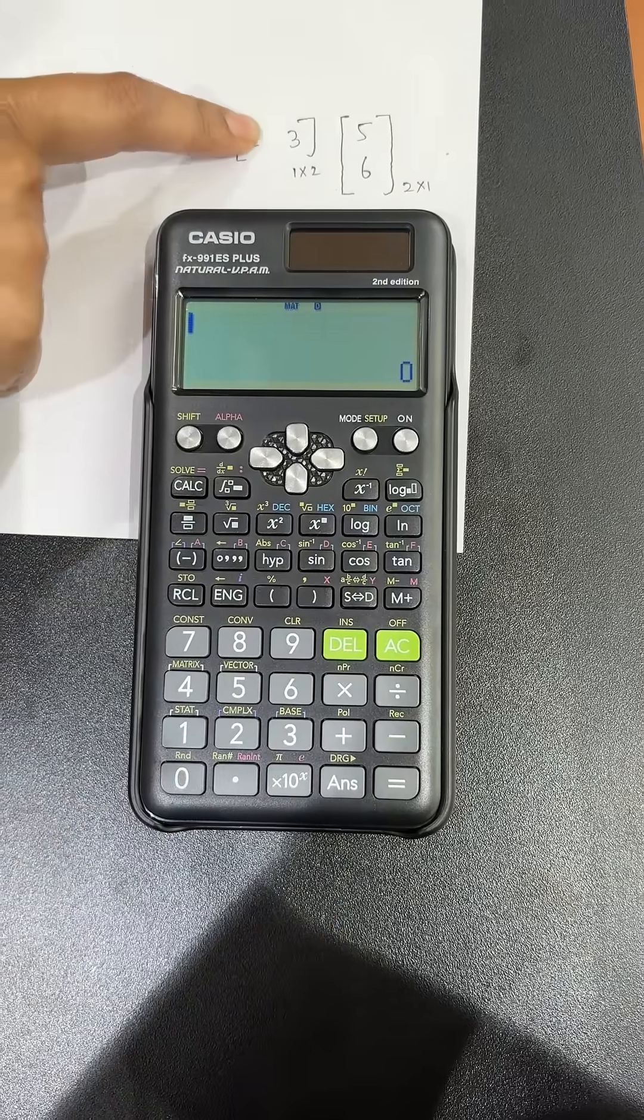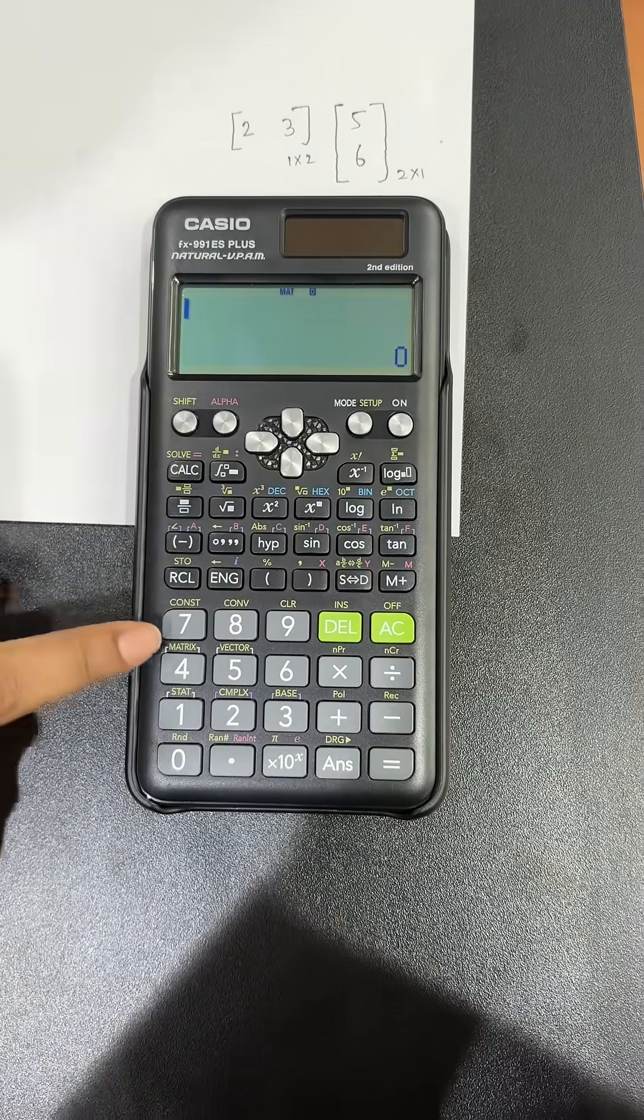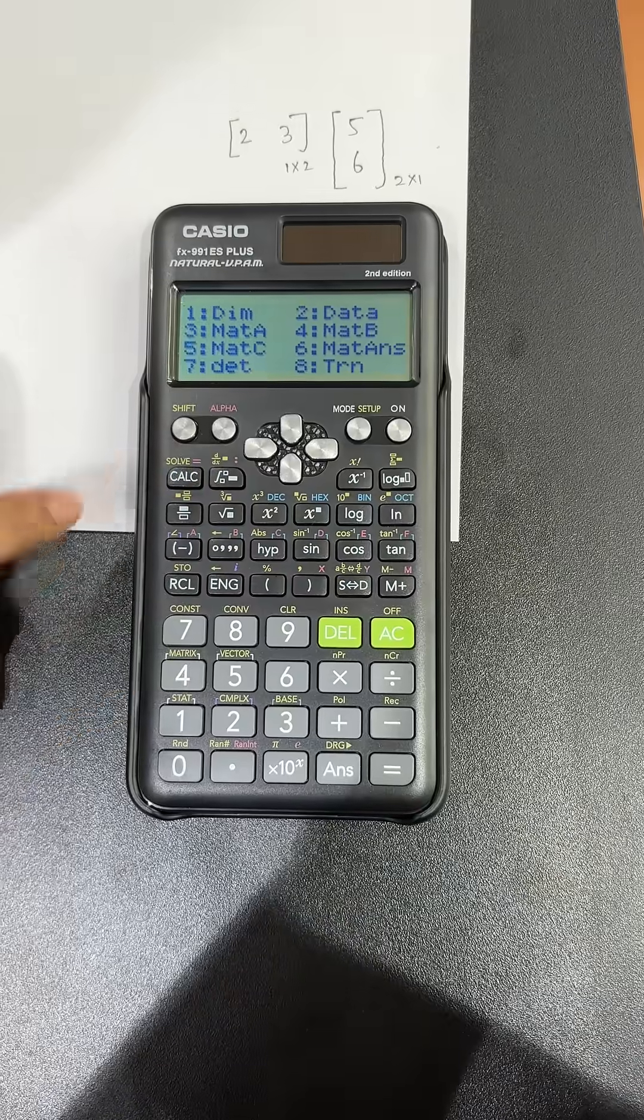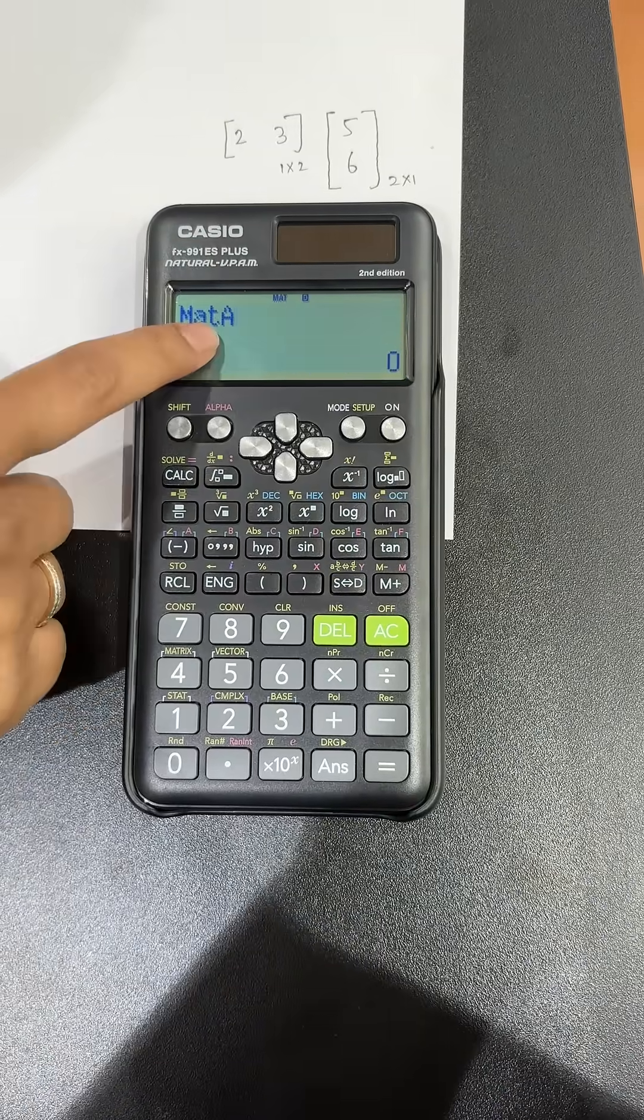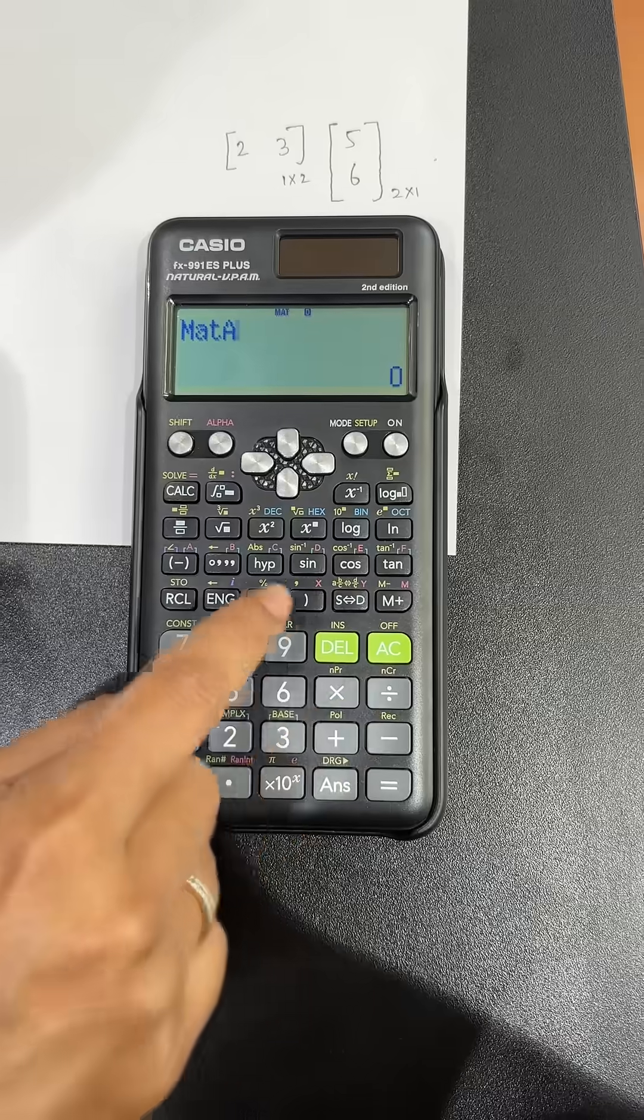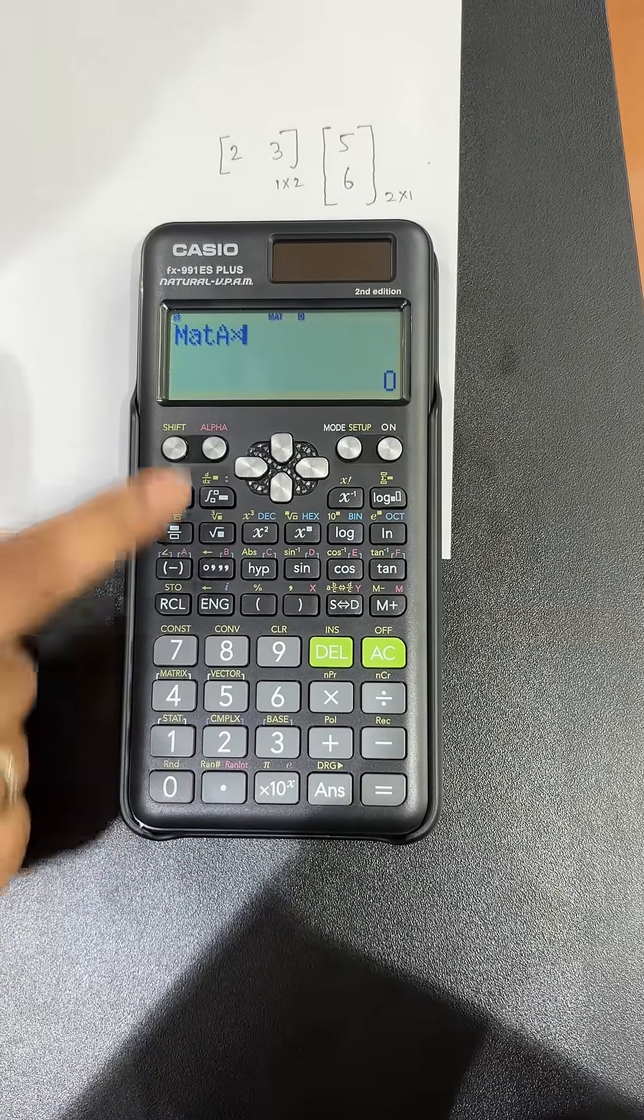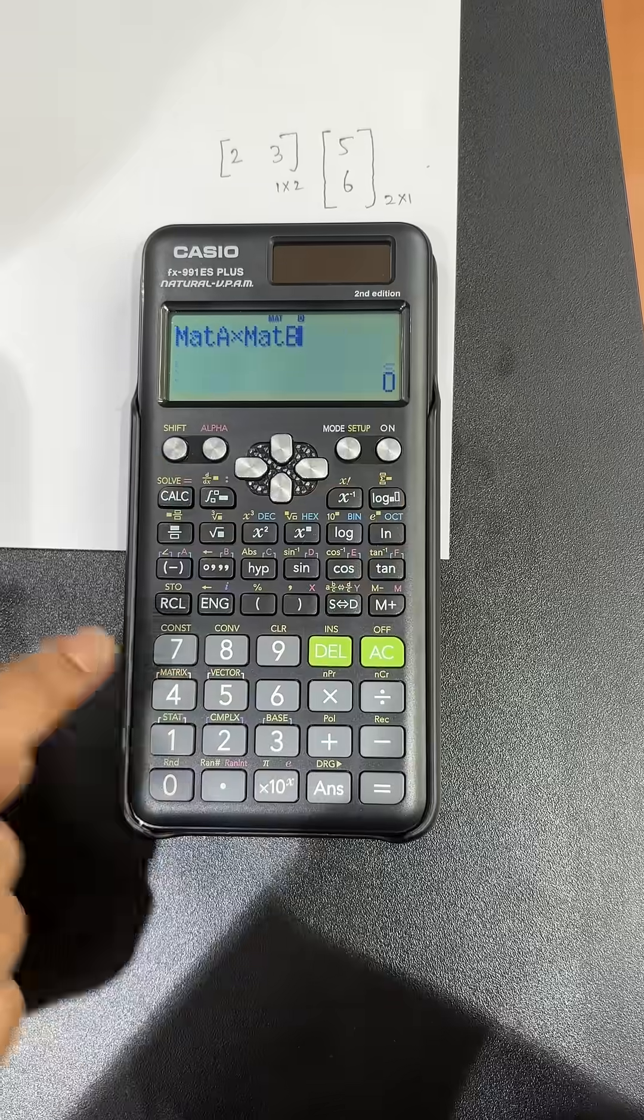Now you have to multiply matrix A and matrix B. For that, click on shift and the button that gives you the matrix option. I will click on 3, which gives you mat A. You need to multiply these. I will click on the multiplication button, then shift matrix, and then mat B, which is 4.